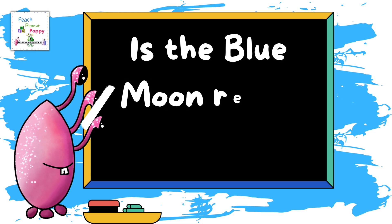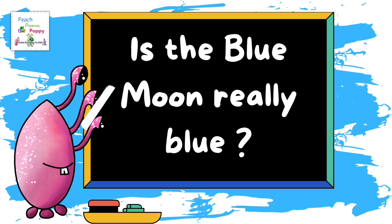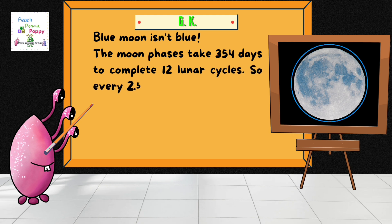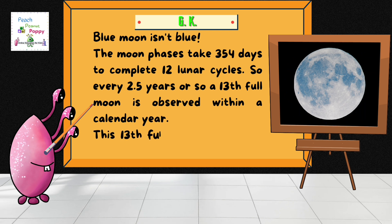Have you ever wondered, is the blue moon really blue? Well, the blue moon isn't really blue. The moon phases take 354 days to complete 12 moon cycles. So every 2.5 years or so, a 13th full moon is observed within a calendar year. This 13th full moon is referred to as the blue moon.